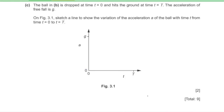Part C: sketch acceleration versus time for the falling ball from t = 0 to t = T. Initially only gravity acts, giving acceleration g. As the ball speeds up, air resistance increases, so net acceleration decreases. Before reaching terminal velocity, acceleration decreases to zero.